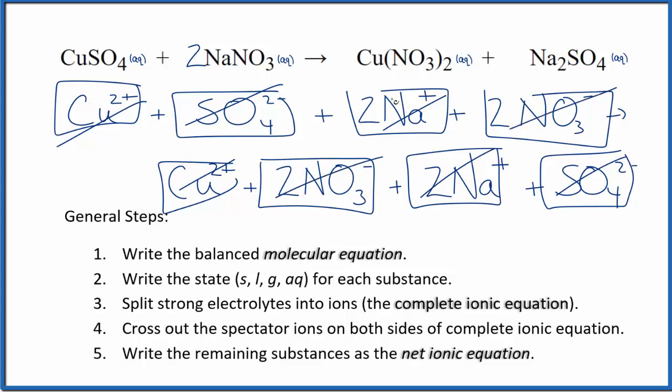Everything's a spectator ion. Everything crossed out, nothing changed. So for this reaction, CuSO4 plus NaNO3, that's copper 2 sulfate and sodium nitrate. There is no reaction. Because of that, we really can't write a net ionic equation that is meaningful.